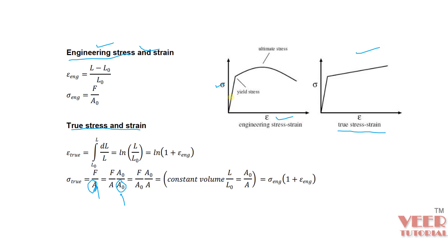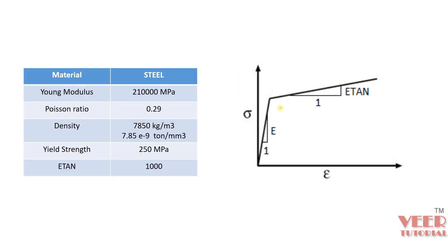In this analysis we are going to insert a different type of material model using E10. We plot a curve between stress and strain, with the yielding point and the UTS point visible. E10 is the tangential modulus — it is the slope, which is the change in stress divided by change in strain. The material parameters we are taking are: Young's modulus, Poisson's ratio, density, yield strength, and the E10 value.